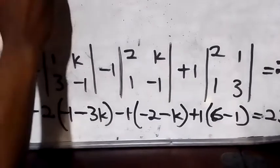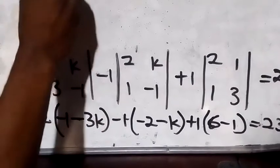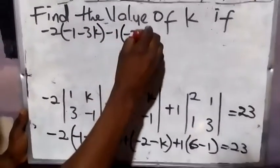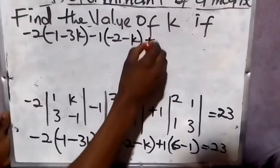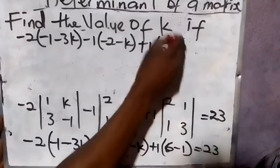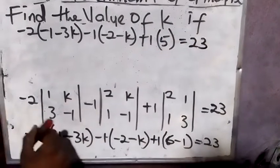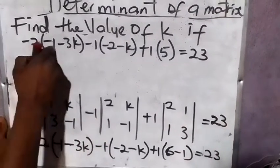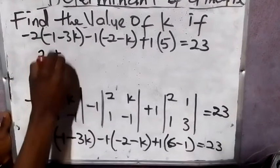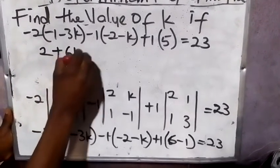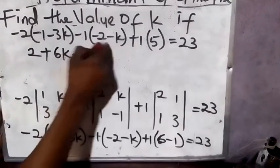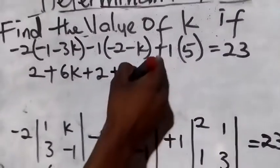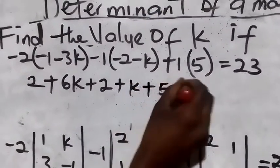So we have: minus two, then minus one minus three k, minus one, plus one, six minus one gives five. Now open the brackets: minus two times minus one gives plus two, minus two times three k gives six k. Then minus one times two gives two, minus one times k gives k. Plus one times five gives five.